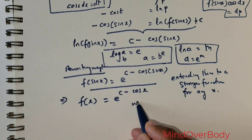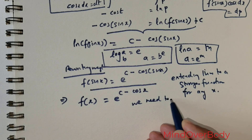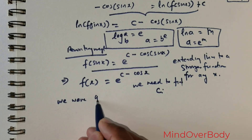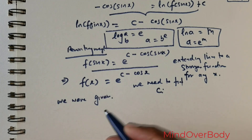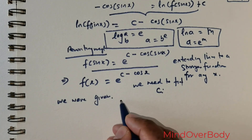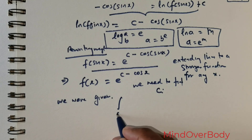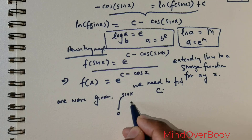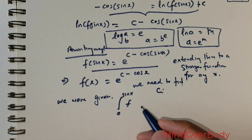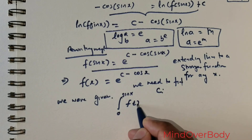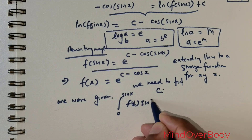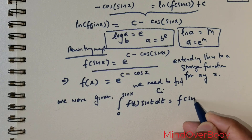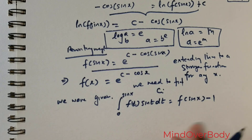To find C, we use the original given condition: the integral from 0 to sin x of f(t)·sin(t) dt = f(sin x) − 1. We will substitute f(t) = e^(C − cos t) into this integral and use integration by substitution with q = C − cos t.